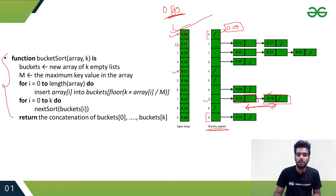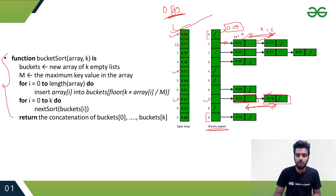For 0.17, we store it in bucket one. There is also another value starting with one at the seventh index, so it also goes to bucket one. We sort them so 0.12 and 0.17 are in relative order. Similarly, 0.39 goes to bucket three, 0.26 to bucket two, and values starting with six go to bucket six.